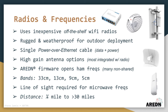These microwave frequencies require direct line-of-sight for reliable communication. Depending on the type of radios and antennas deployed, it's possible to achieve network links anywhere from a few miles to well over 30 miles between sites.